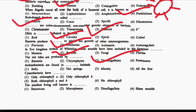Next question: Archaebacteria are found in DASH habitat. Option 1: Salty. Option 2: Hot springs. Option 3: Marshy. Option 4: All of the above. The correct answer is Option 4, all of the above — salty, hot springs, and marshy habitats.